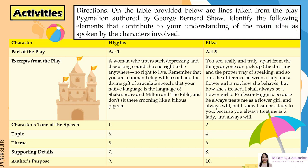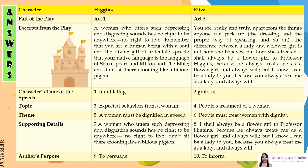Here are the answers: 1. Humiliating. 2. Grateful. 3. Expected behaviors from a woman. 4. People's treatment of a woman. 5. A woman must be dignified in speech. 6. People must treat women with dignity. 7. Supporting detail: 'A woman who utters such depressing and disgusting sounds has no right to be anywhere — no right to live. Don't sit there crooning like a bilious pigeon.' 8. Supporting detail: 'I shall always be a flower girl to Professor Higgins, because he always treats me as a flower girl, and always will, but I know I can be a lady to you, because you always treat me as a lady, and always will.' 9. To persuade. 10. To inform.